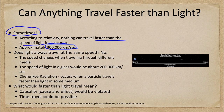Here we see the speed of light in real time, going from the Earth to the Moon in a little over about one and a quarter seconds. That's about how long it takes light to travel, which gives you an idea of how fast that is. The distance between the Earth and the Moon is about 400,000 kilometers, so it takes a little more than a second to get there.